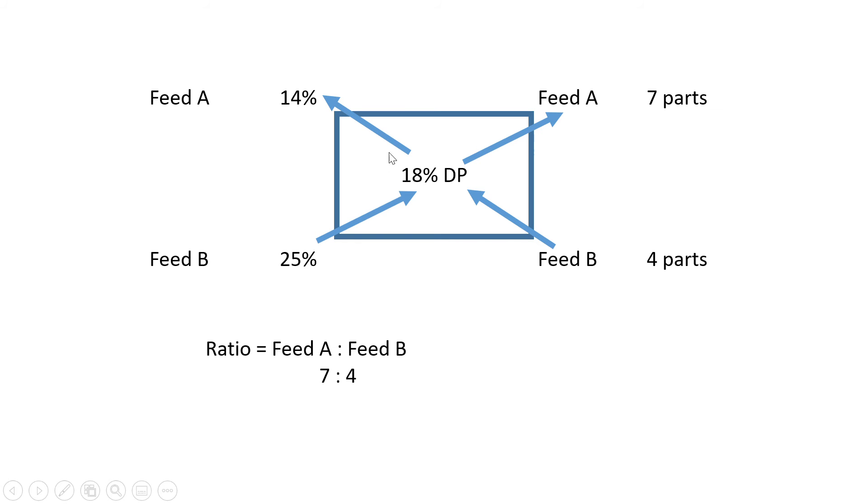They gave you two different feeds, Feed A and Feed B. It doesn't matter if you write Feed B on top and Feed A at the bottom—just make sure you put the right value next to the correct feed. Feed A has 14% protein and Feed B has 25% protein. If you want protein at the end, you have to keep using protein here and here. You can't suddenly use the TDN value because TDN and DP are two different things.